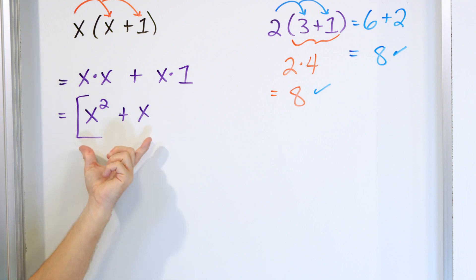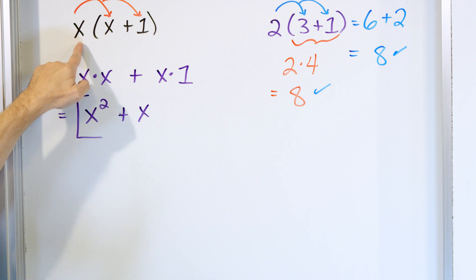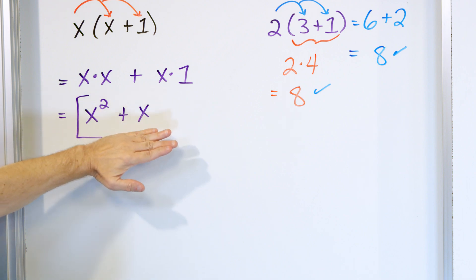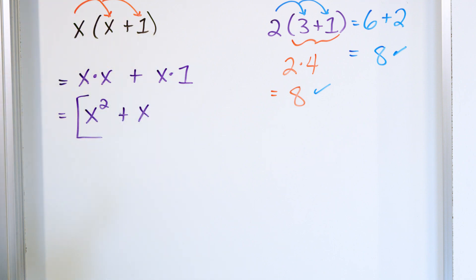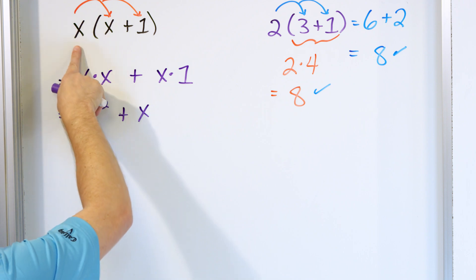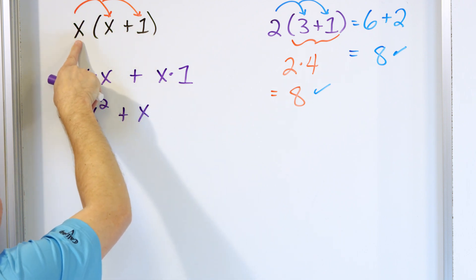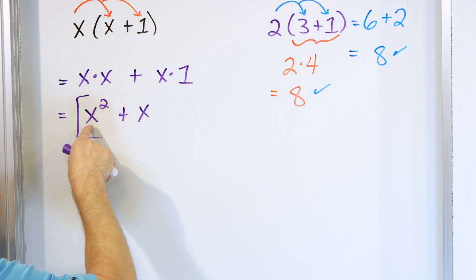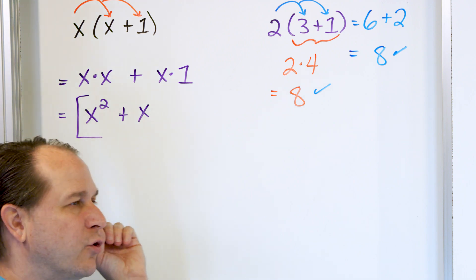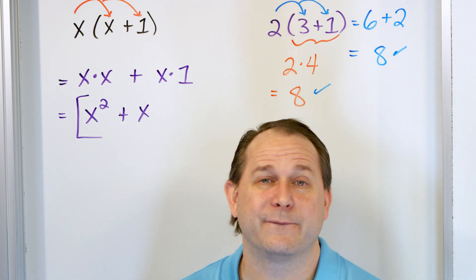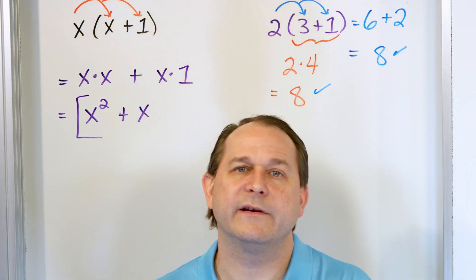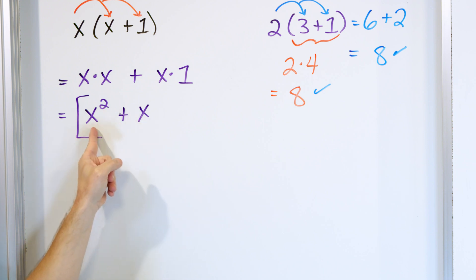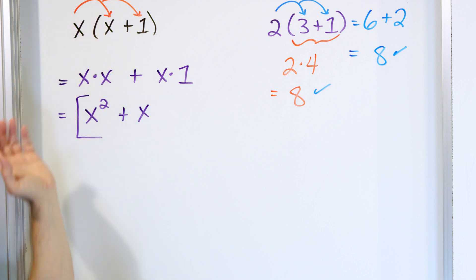What does it physically mean that x times parentheses x plus 1 equals x squared plus x? If I put any value in for x in the original expression, and then put the same value into x squared plus x, I get the same answer. Let's use x equals 1: 1 times parentheses 1 plus 1 is 1 times 2, which is 2. And 1 squared plus 1 is 1 plus 1, which is also 2. No matter what value of x you use, these two expressions are exactly equal.